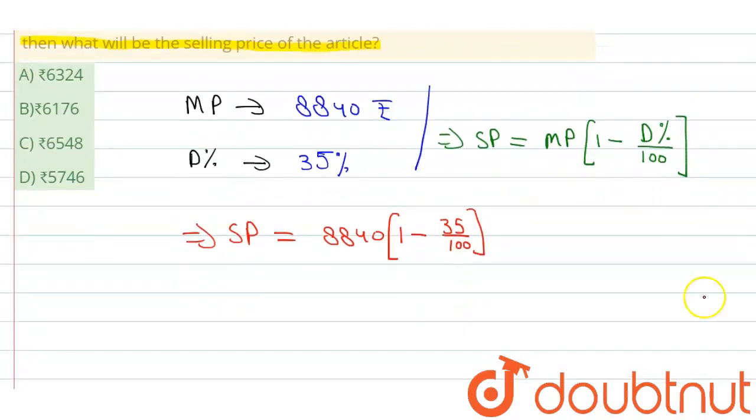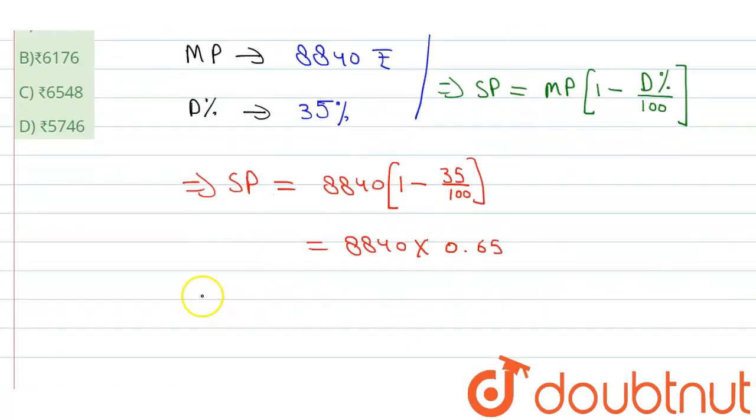इसको हम लोग simplify करेंगे तो यह value आ जाएगी 8840 into 0.65. इसको हम लोग solve कर लेंगे तो final हमारे पास selling price of article, SP की value आ जाएगी 5746.